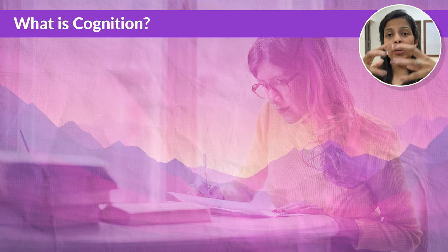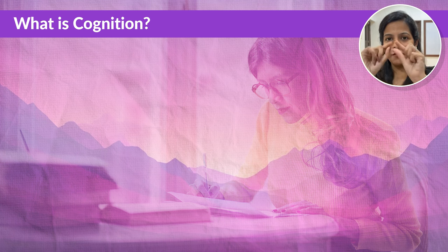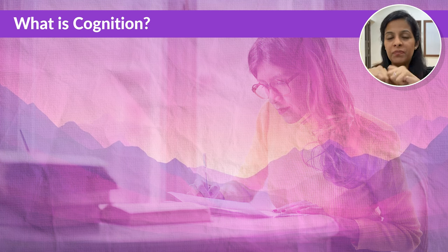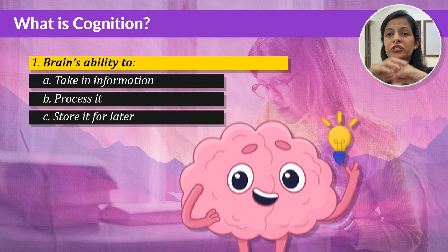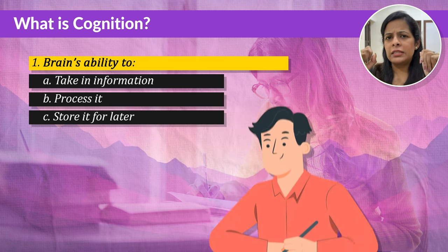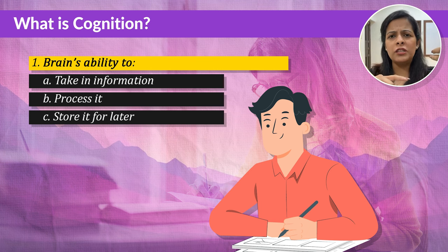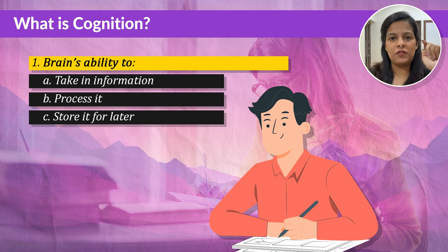Before we look at Cognitive Development Theory in detail, let us first understand the meaning of the word cognition, because that forms part of the terminology. Cognition is your brain's ability to take in information, process it, and then store it for later use. When you are solving a maths problem, trying to remember your favourite song's lyrics, or figuring out how to fix your TV remote, you're actually using your cognitive skills.